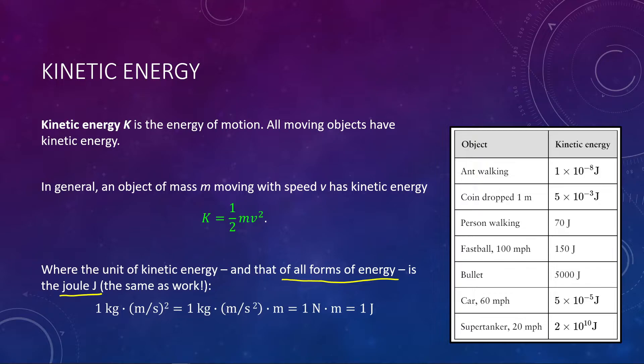On the other hand, something like a supertanker is an incredibly massive object and it can still move fairly fast, so you're going to see a fairly large energy. Looking at this table, I believe there's a typo — it looks like it has this to the negative fifth power, but I believe that would be the fifth power for a car. This table might help give you a ballpark idea on whether or not your calculated kinetic energy is correct.